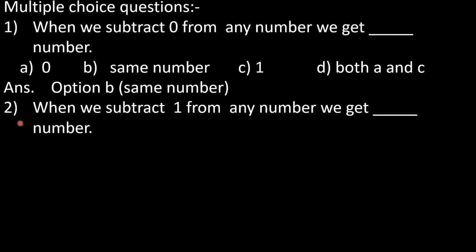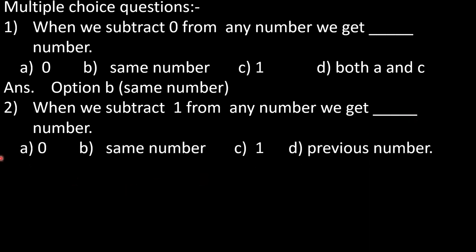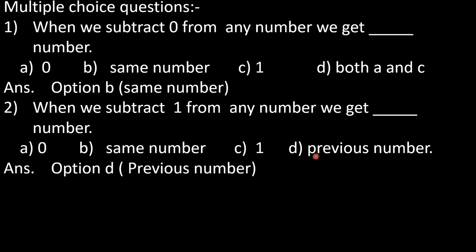In question number 2: when we subtract 1 from any number, we get dash number. Options: A: 0, B: same number, C: 1, D: previous number. When we subtract 1 from any number, we get the previous number of our counting, so option D, previous number, is correct.